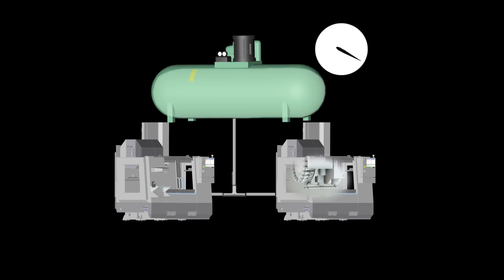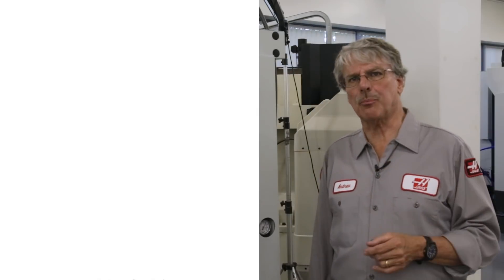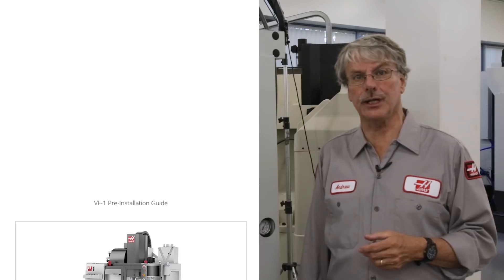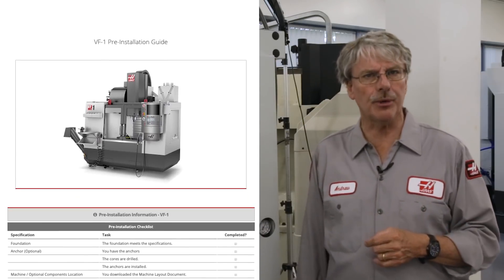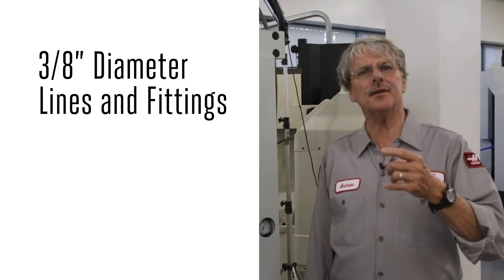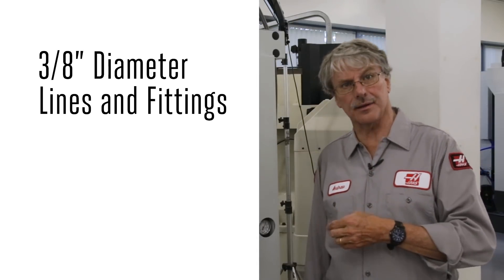We publish a pre-installation guide for each machine that we sell. For the VF1, we recommend 4 standard cubic feet per minute, or SCFM, of air. We also suggest 3/8 inch diameter lines and fittings. Getting the right air volume to the machine is kind of a two-part equation.